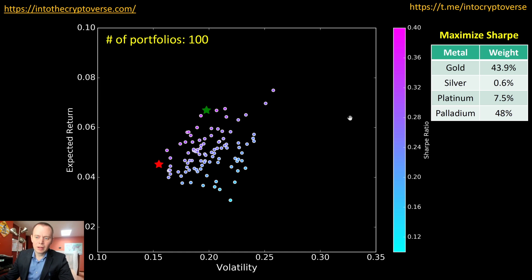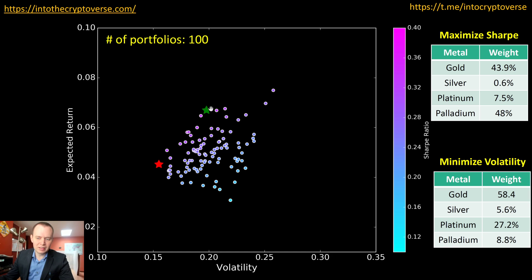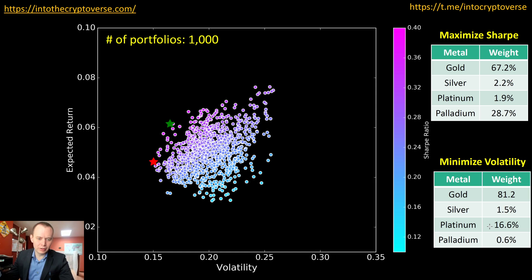With 100 random portfolios plotted, the portfolio that maximizes the Sharpe ratio is the green star. That portfolio is weighted around 44% gold, 0.6% silver, 7.5% platinum, and 48% palladium. However, 100 portfolios is essentially meaningless when you have four different assets — I just wanted to get you accustomed to the approach. To minimize volatility, the red star — the leftmost point on the curve — corresponds to roughly 58% gold, 6% silver, 27% platinum, and 9% palladium.